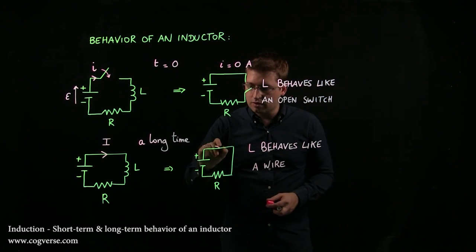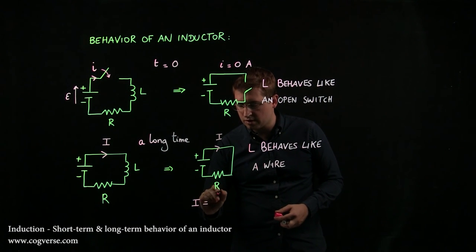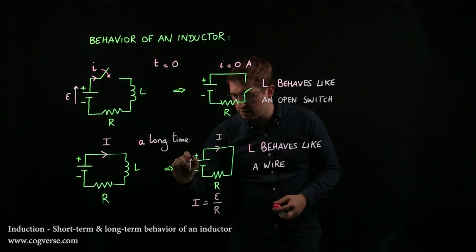And therefore, we could even derive the current. We can say, well, I in that case, simple Ohm's law is equal to epsilon over R, where this is epsilon.